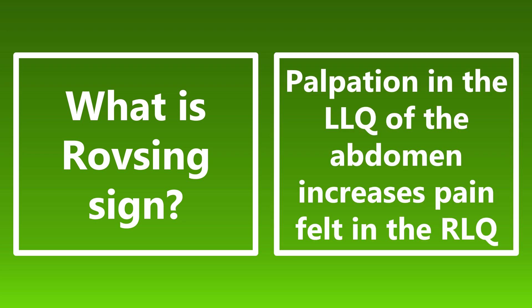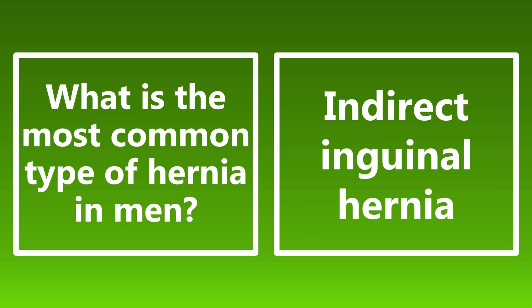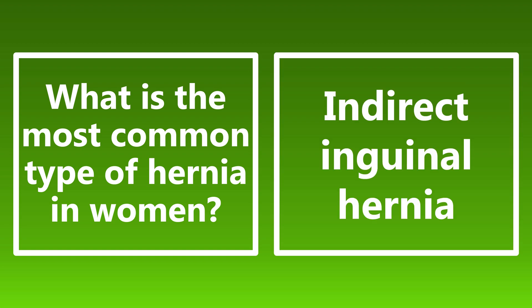Rovsing's sign is palpation in the left lower quadrant of the abdomen that increases pain felt in the right lower quadrant, classically seen in acute appendicitis. What is the most common type of hernia in men? An indirect inguinal hernia — these protrude via the internal inguinal ring and come out lateral to the inferior epigastric vessels. And the most common hernia in women? Same thing — indirect inguinal hernia. It's the most common type in both men and women.